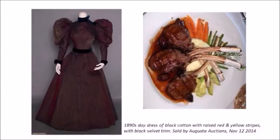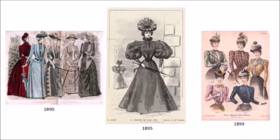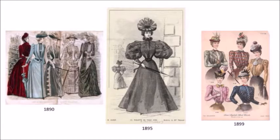This is an 1890s day dress, and this is a lamb chop — you can see quite a resemblance. This is the fashion in the 1890s: a little bit of a puff sleeve. By 1895, a giant puff sleeve. By 1899, back down to something more normal. This silhouette in 1899 would become quite common until the 1920s.